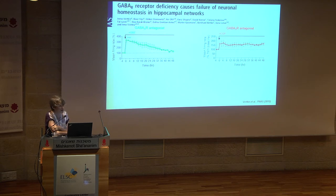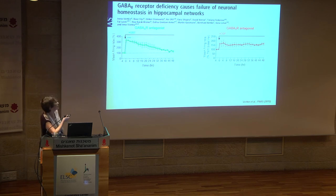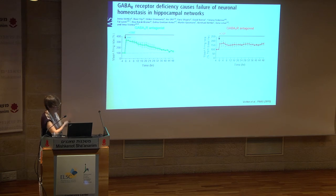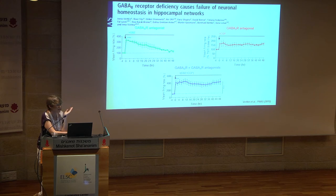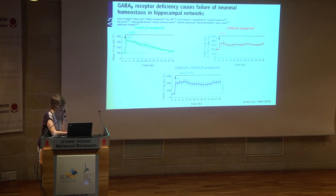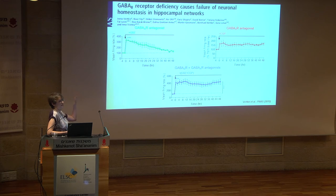One simple explanation was that maybe the system doesn't care — the GABA-B blockade produced only about 50% increase in firing rate, perhaps not enough to provoke homeostatic control. To address this we added both antagonists together. Blocking all GABA receptors caused a fourfold increase in firing rate, but the system was still incapable of coming back. The conclusion is that this lack of homeostasis is due to GABA-B receptor blockade.